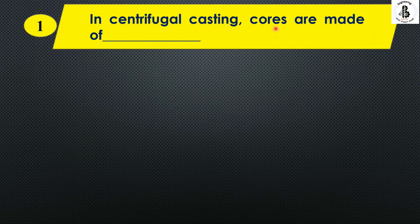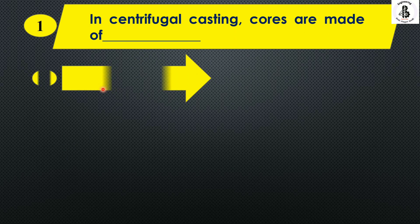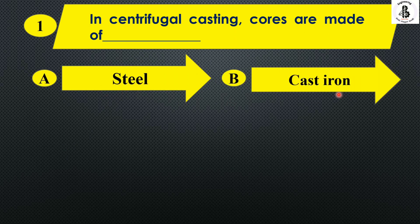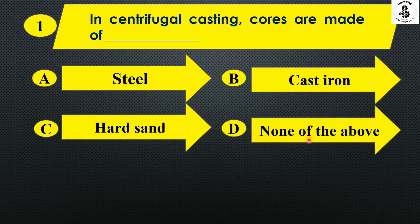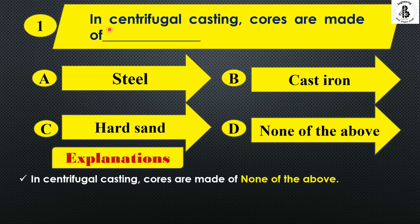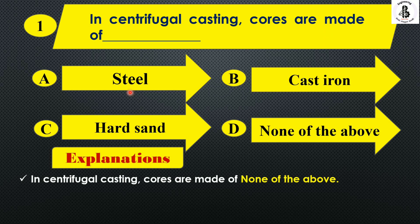In centrifugal casting, cores are made of: option A steel, option B cast iron, option C hard sand, and option D none of the above. Basically, in centrifugal casting, without utilization of a core you can make a hollow component. So none of the given materials apply. The right answer is option D, none of the above.